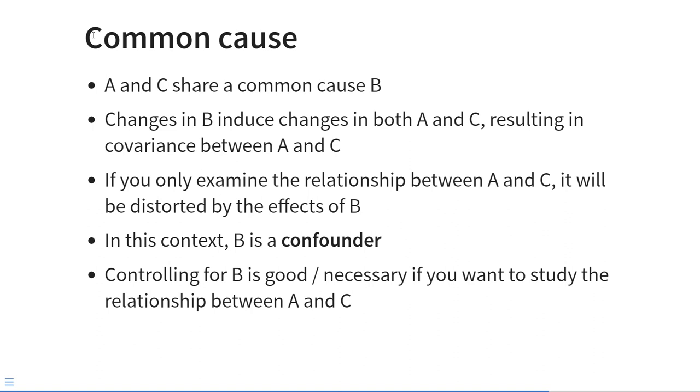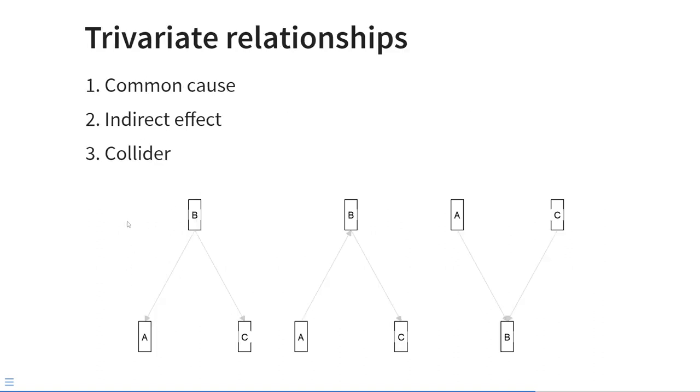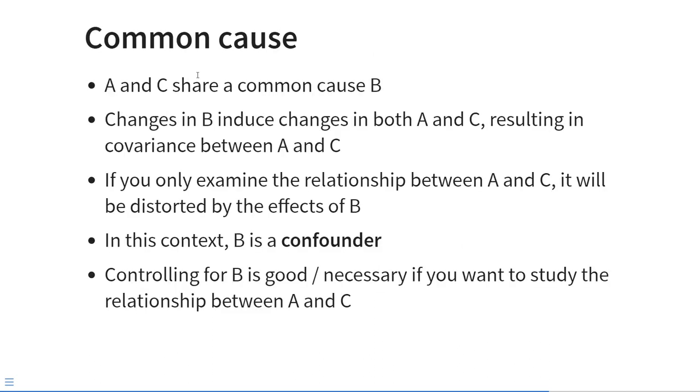First, let's delve into the common cause scenario a bit deeper. This is the fork diagram on the left. In this case, A and C share their common cause B. That means that any changes in B cause changes in both A and C. And that will result in covariance between A and C. So if you are only studying the relationship between A and C, that relationship will be distorted by any effect of B. In this context, we call B a confounder. And controlling for the confounder B is good and is necessary if you want to study the unbiased relationship between A and C.